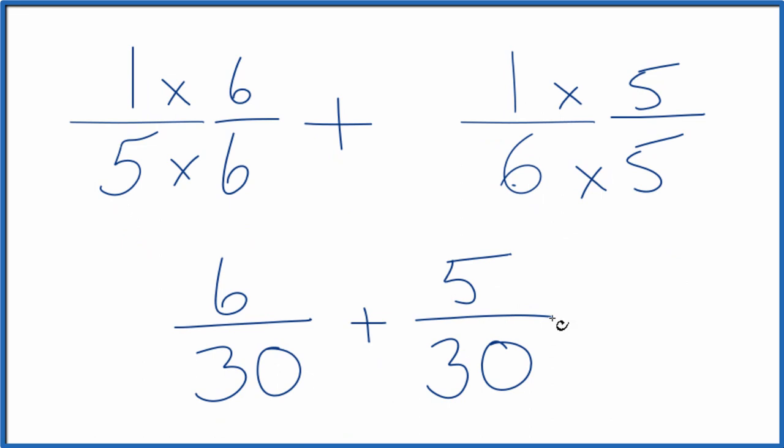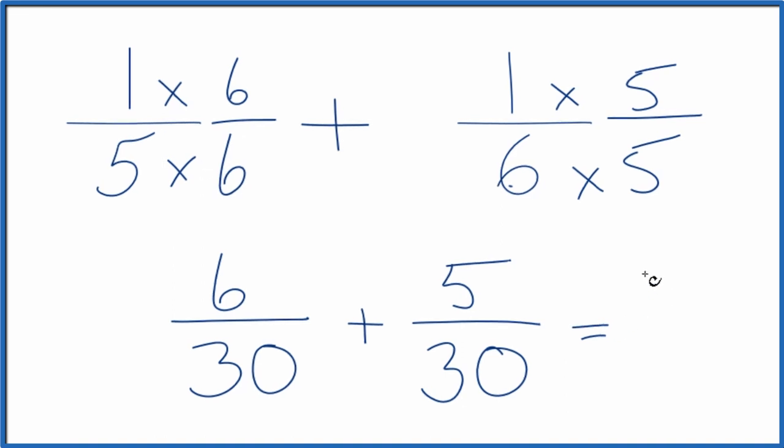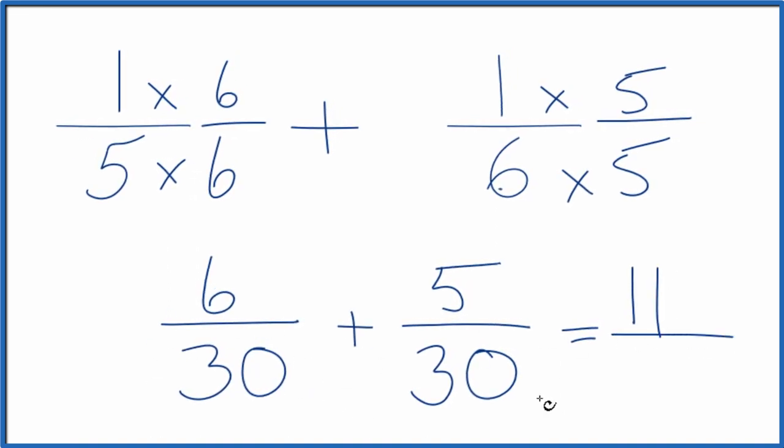Since we have the same denominators here, all we need to do is add the numerators together to figure out what one-fifth plus one-sixth adds up to. So six plus five, that equals eleven. We're adding the fractions, and the denominator is the same. We just bring it across, thirty.